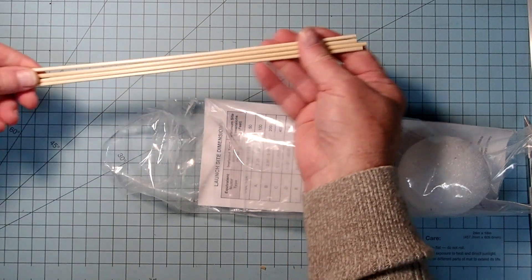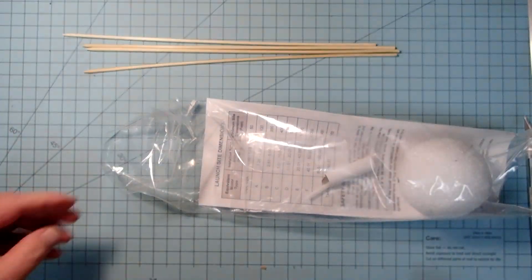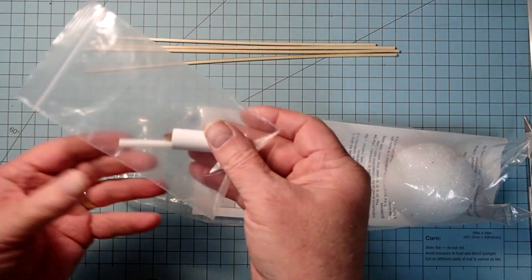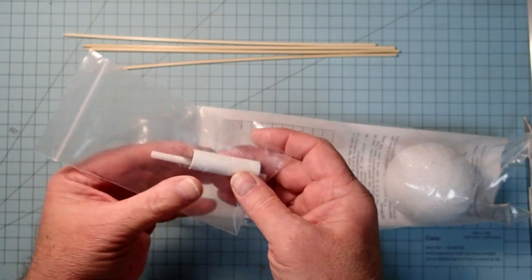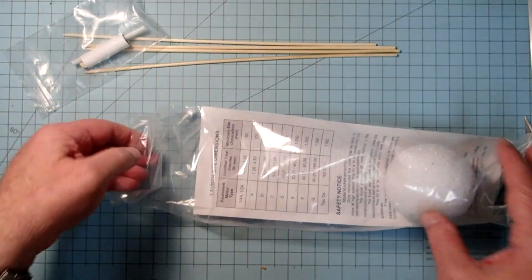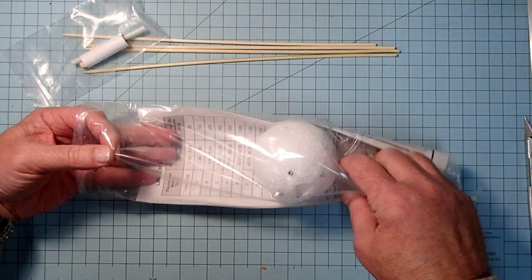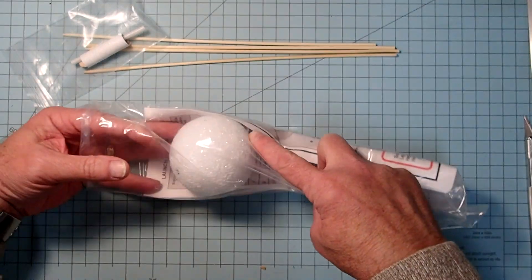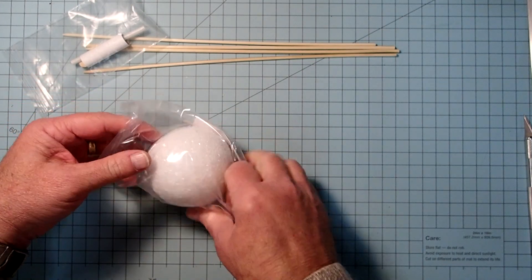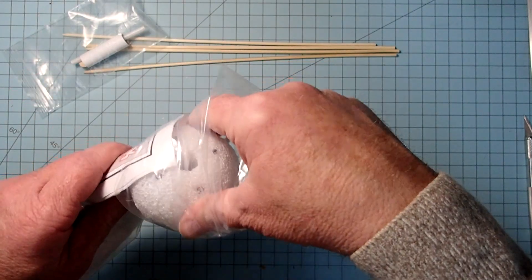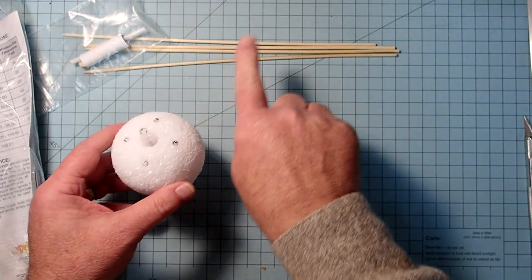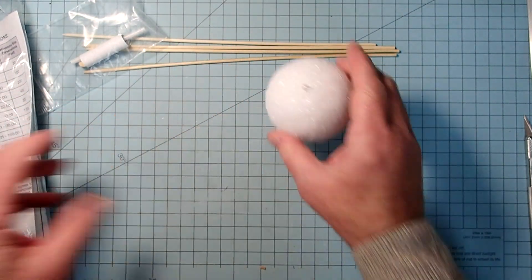So we have four skewers here that will be the antennae. A small parts bag here and this contains the motor mount, a bulkhead and a launch lug. The main body of the rocket here is this styrofoam ball. And this is pre-drilled to accept the dowels and the motor mount there.